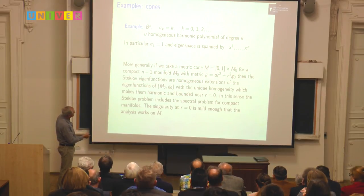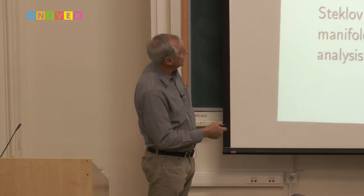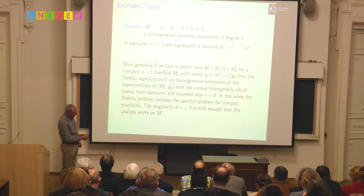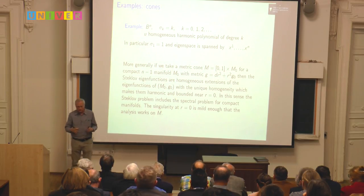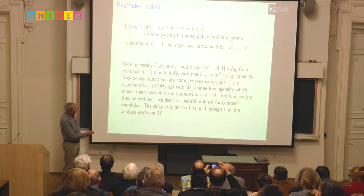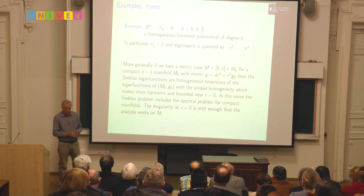This generalizes to cone metrics. More generally, if I take a closed manifold M_0 and take the cone over it — the product [0,1] × M_0 with metric dr^2 + r^2 g_0 modeling the Euclidean metric in spherical coordinates — then the Steklov eigenfunctions are just homogeneous extensions of the eigenfunctions on the boundary, and the eigenvalues are the degrees of those extensions.